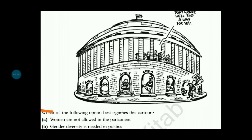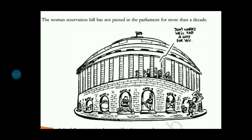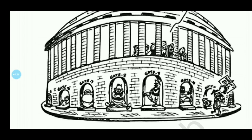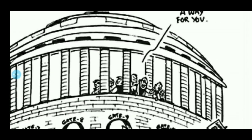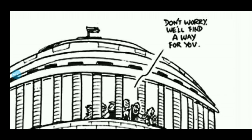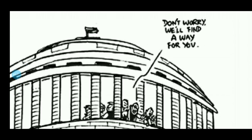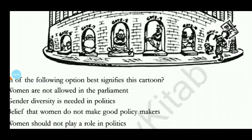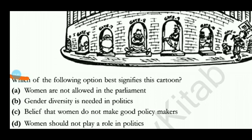The next question shows the Women's Reservation Bill has not been passed in parliament for more than a decade. In the image, all the gates are women and the gates are closed. Opposition members say 'don't worry, we'll find a way for you' as they criticise government policies. The options are: women are not allowed in parliament; gender diversity is needed in politics; women do not make good policy makers; women should not play a role in politics. The correct answer is: women are not allowed in the parliament.